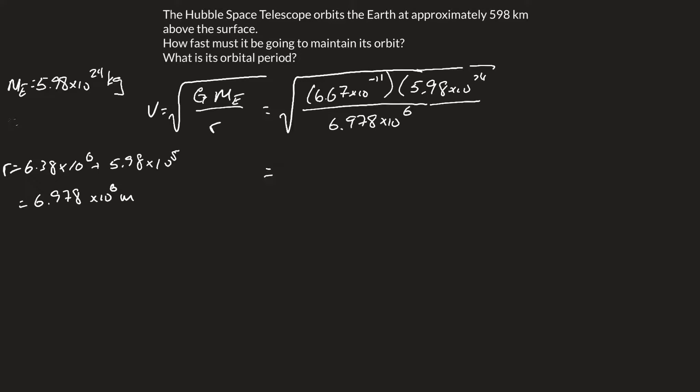When we solve for that, we're left with 7560 meters per second. That's the speed at which the Hubble telescope must maintain to maintain that orbit.